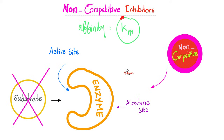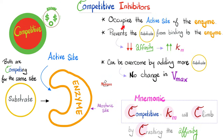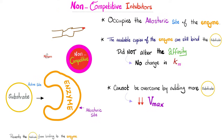Recall from the previous video that competitive inhibitors could be overcome — it was reversible. You could kick Cody the capitalist out of the active site by adding more substrate. For a non-competitive inhibitor, can you kick it away just by adding more substrates? The answer is no. No one can kick Nancy the Karen away. That's why Vmax will go down. With competitive inhibitors, Km went up and there was no change in Vmax because you could overcome it. But with Nancy the Karen occupying the allosteric site, there is no change in affinity, no change in Km. You cannot overcome Karen — it's irreversible — and that's why Vmax goes down.